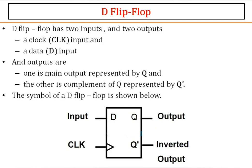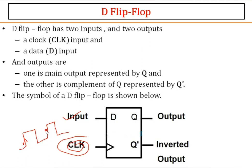The D flip-flop has two inputs: the D input and the clock pulse. Clock pulse is very important in flip-flops. You can take either a positive going or negative going clock pulse. Generally we consider a positive going signal as the clock pulse. A signal going from zero to one is positive going; from one to zero is negative going. You can also consider negative going clock pulses for this D flip-flop or any flip-flop.